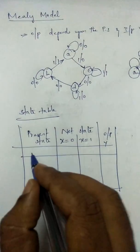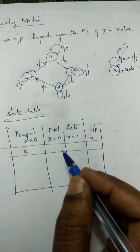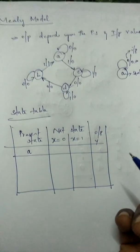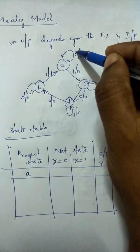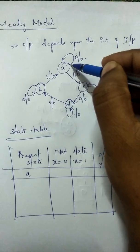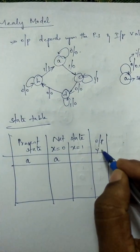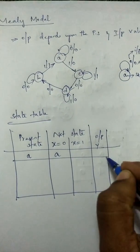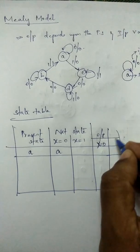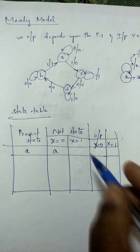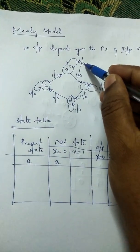Our definition is that the output depends upon the present state and the input values. For present state A, when the input x equals zero, it goes to the same state A and the output is zero. When input x equals one, it goes to state C and the output is zero.